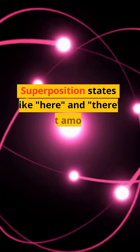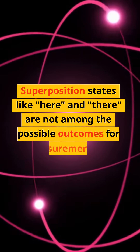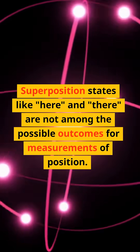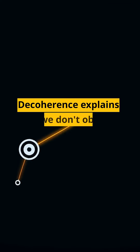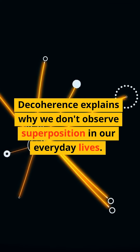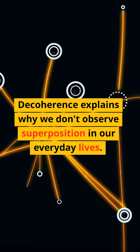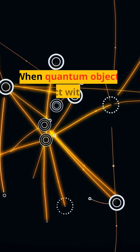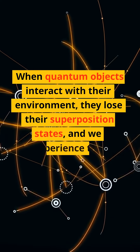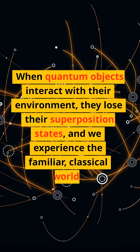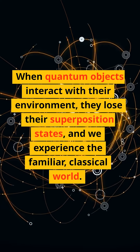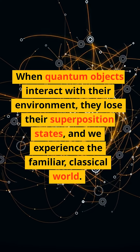Superposition states like being here and there are not among the possible outcomes for measurements of position. Decoherence explains why we don't observe superposition in our everyday lives. When quantum objects interact with their environment, they lose their superposition states, and we experience the familiar classical world.